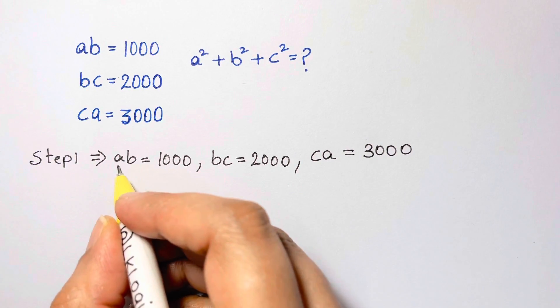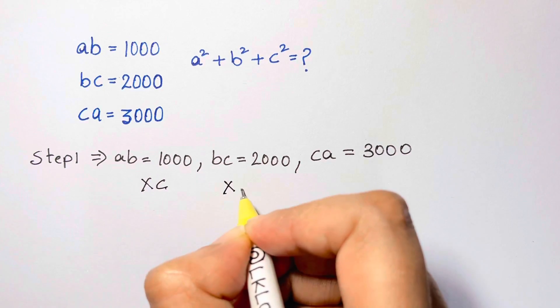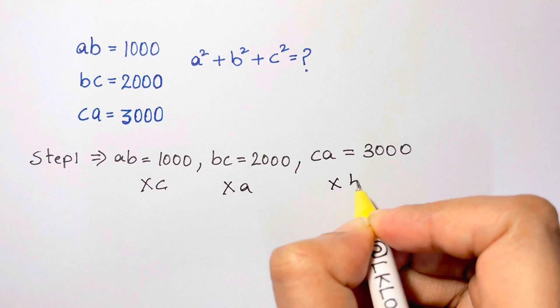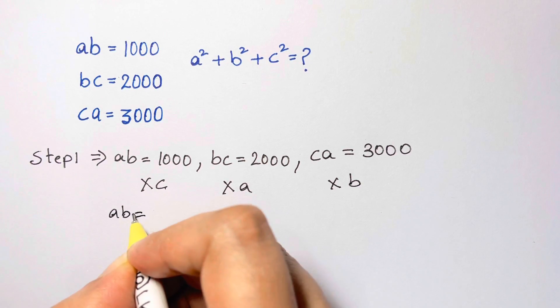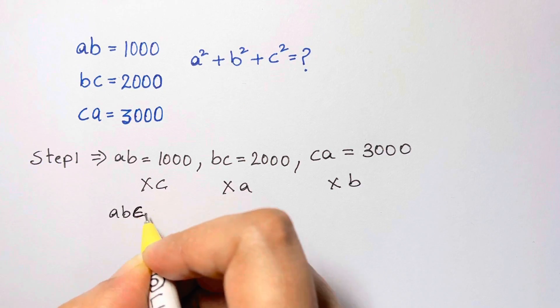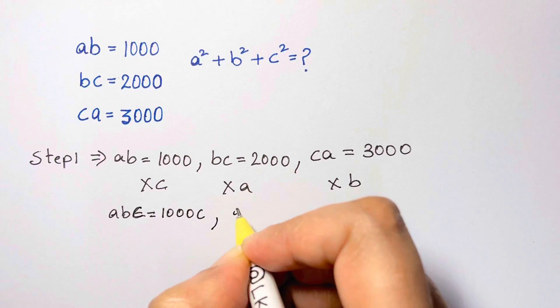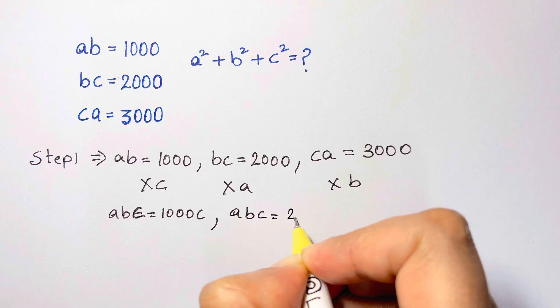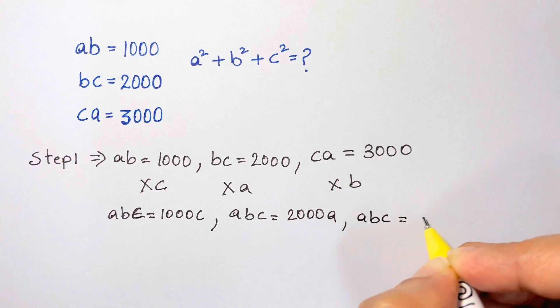Now, let's multiply this term by c and this term by a and this term by b. So after we multiply, we get abc is equal to 1000c. Here we have abc is equal to 2000a and here we have abc is equal to 3000b.